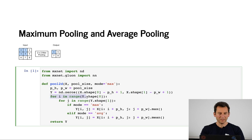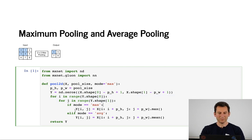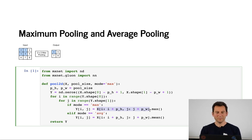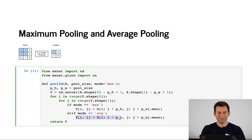Then I iterate over all the pixels in the output — for i and j in the range of y, I perform the following operation: y[i][j] is the maximum over this patch, which goes from i to i plus pH and from j to j plus pw. And if I were to use mean pooling, I'd do this instead.